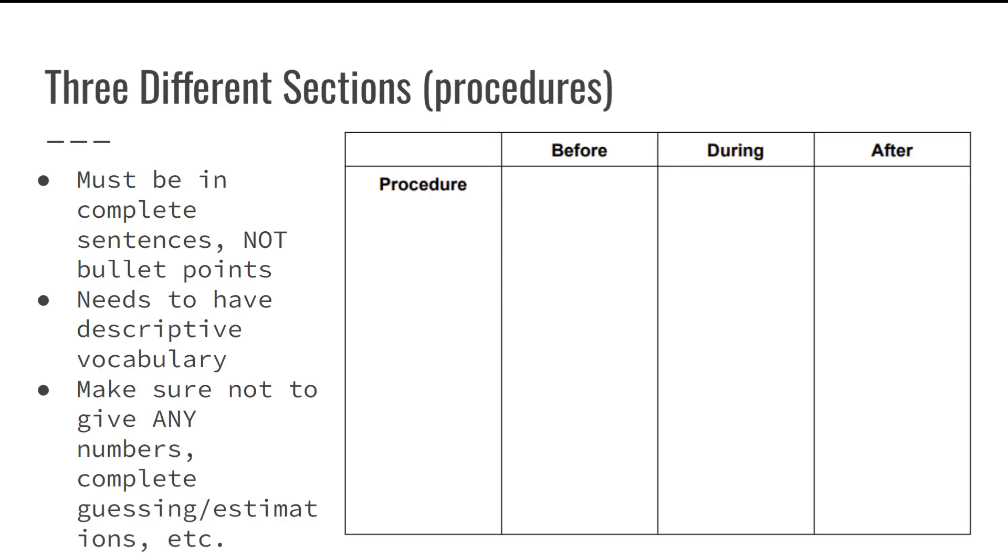The first thing about our qualitative observations is that we're going to have two different sections: our procedures and results. But in our procedures, which is what we're going to be going over right now, we have our before, during, and after.